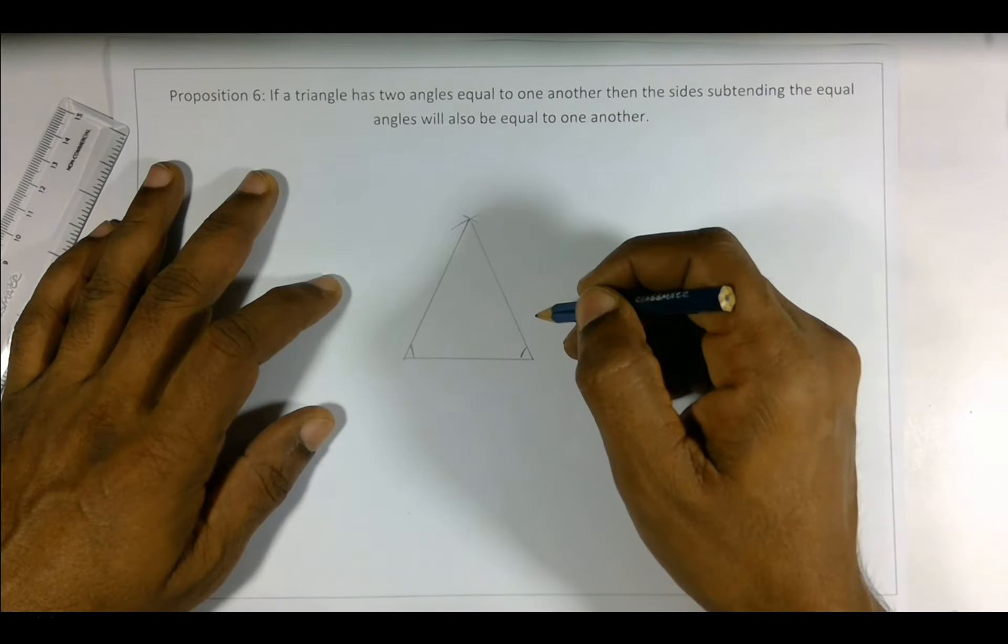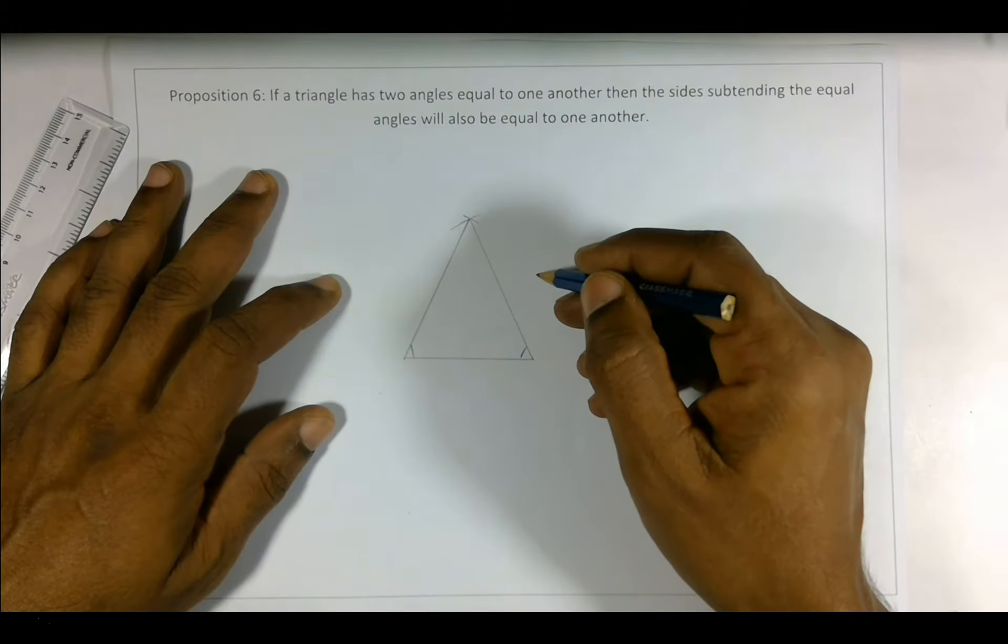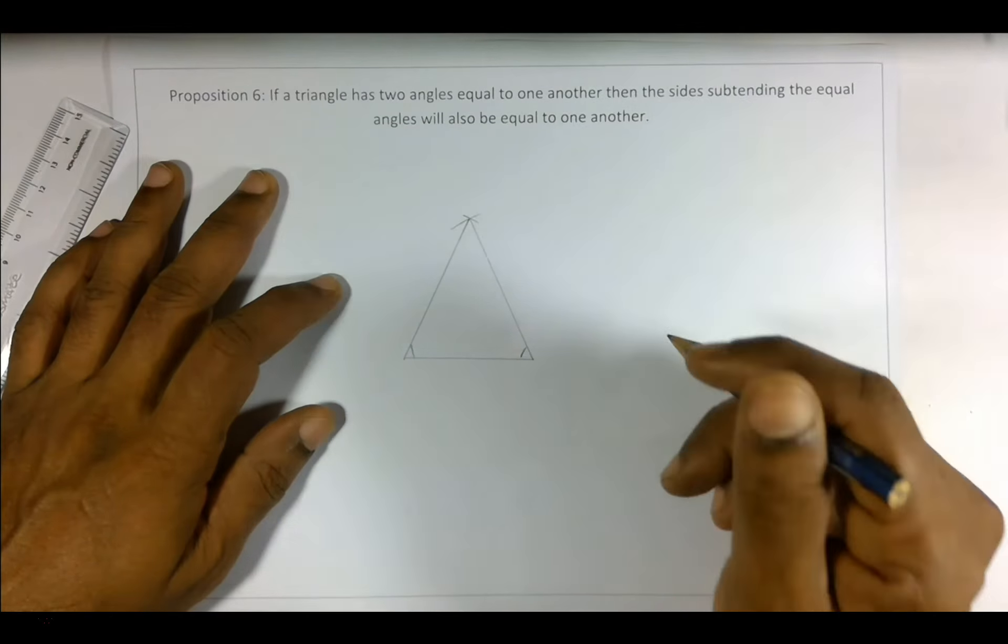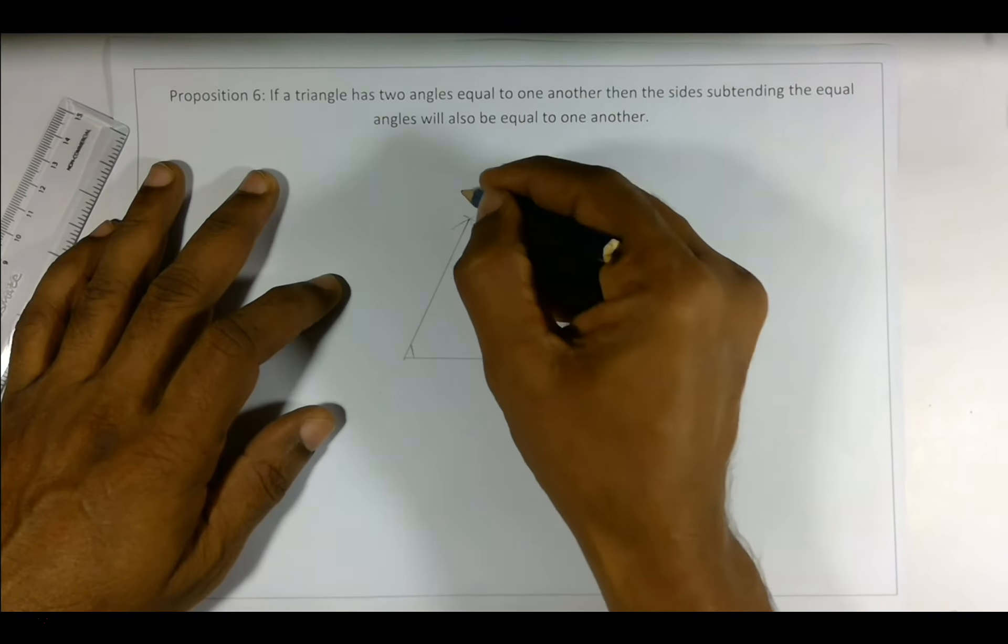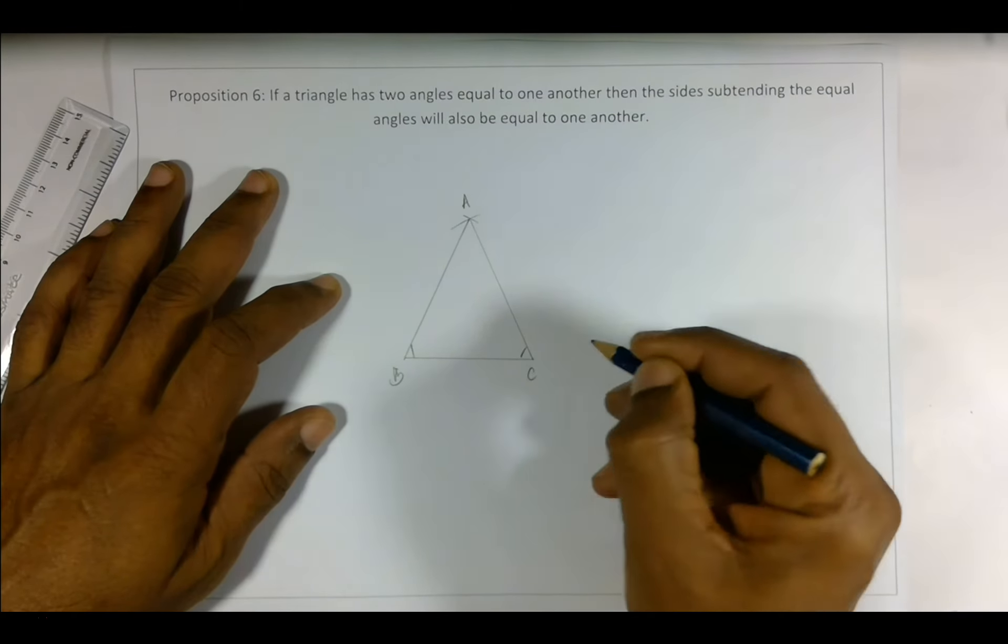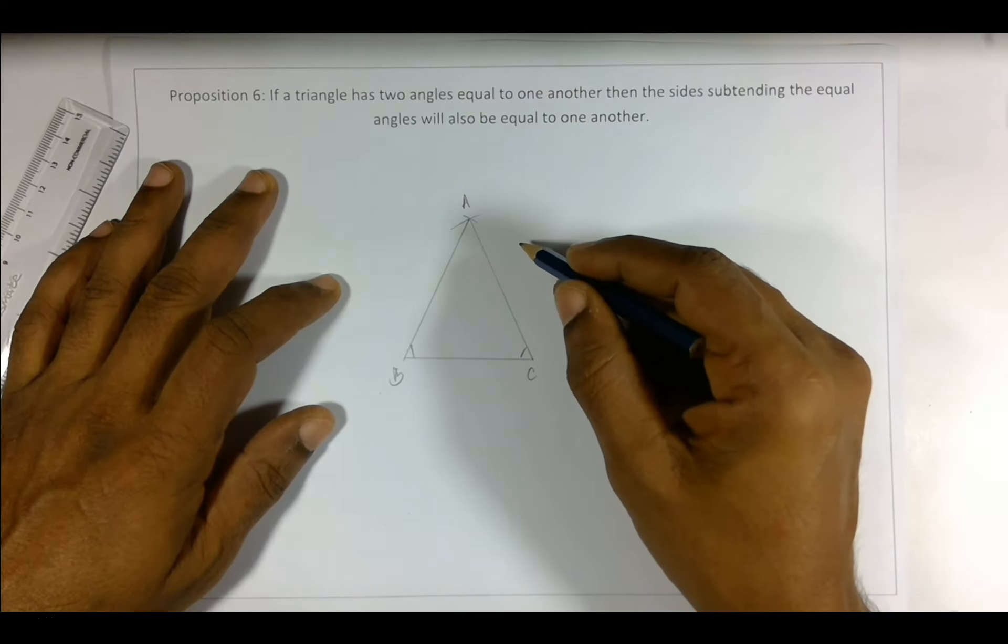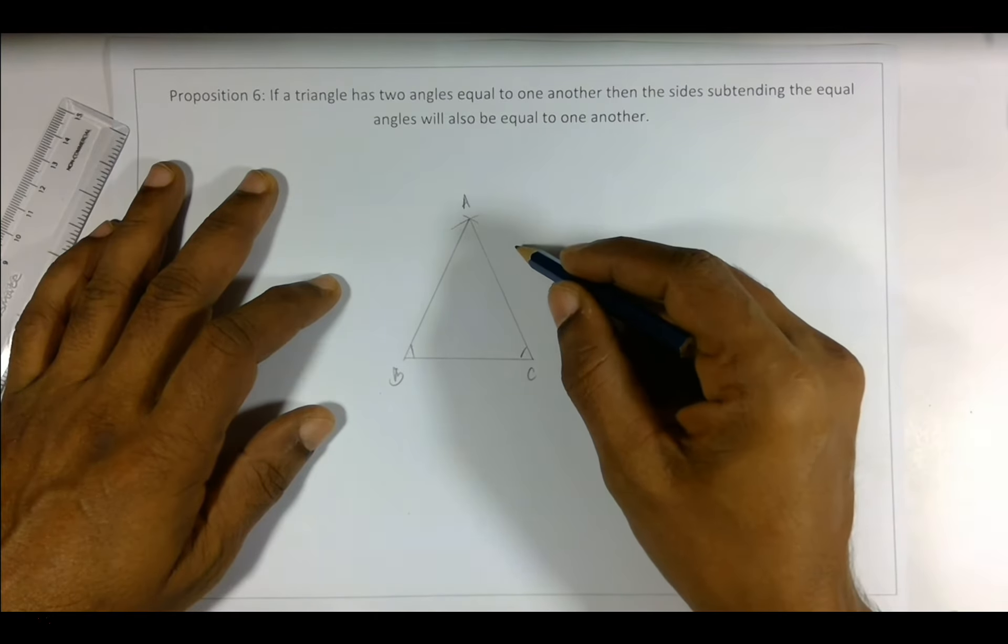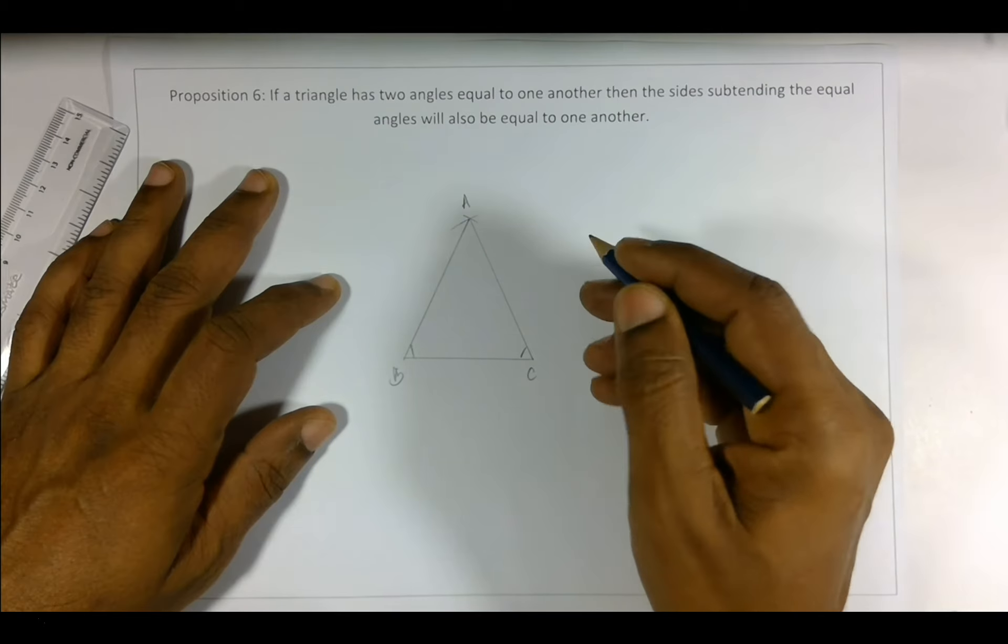One of the tricks that is used, and which we have also used previously, is going the opposite way. Let us say that these two are not equal. Let's say this is A, this is B, and this is C - these three are the vertices. And let's say AB is not equal to AC. That's how we begin.